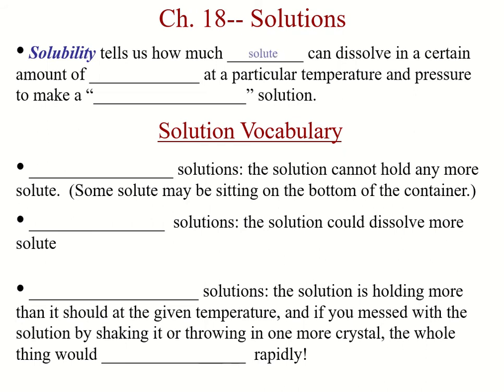Solubility tells us how much solute can dissolve in a solvent at a particular temperature and pressure to make a saturated solution. A saturated solution is where the solution cannot hold any more solute — the solute may be sitting at the bottom of a container. If you've ever tried to sweeten cold unsweetened iced tea and kept pouring sugar until it piled up at the bottom, that's because the cold iced tea solution is saturated.